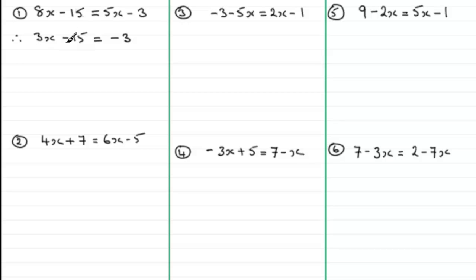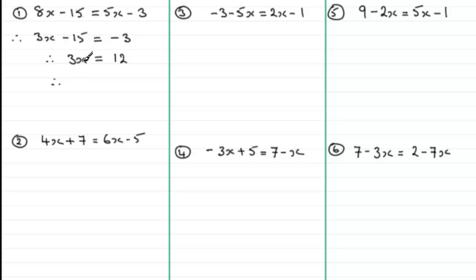Next I need to get rid of the constant minus 15. I do that by adding 15 to both sides. That leaves me with 3x on the left-hand side, and on the right I've got minus 3 add 15, which comes to 12. All I need to do now is divide both sides by 3. I get 3x over 3, which is simply x, and 12 divided by 3 gives me x = 4.